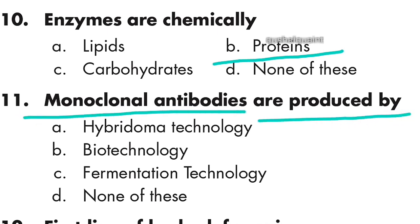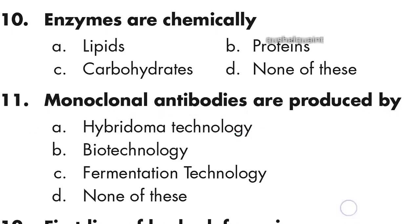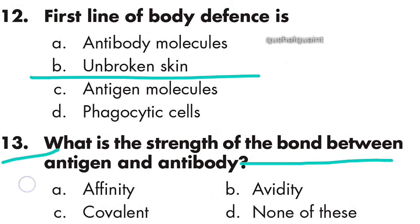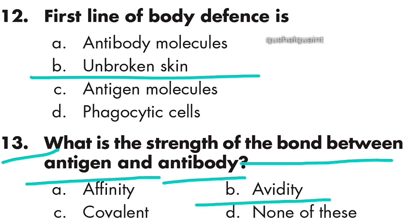Question 11: Monoclonal antibodies are produced by hybridoma technology, option A is right. Question 12: First line of body defense is unbroken skin, option B is right. Question 13: The strength of the bond between antigen and antibodies is avidity, option B is right.